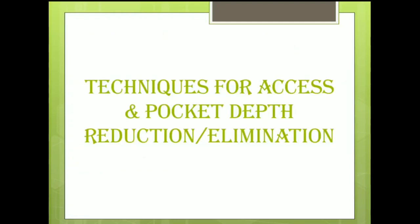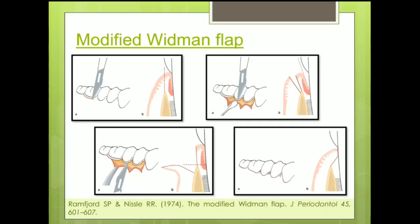Now let's go ahead with various flap surgical techniques. The first one is the modified Widman flap. Historically, the original flap technique proposed by Leonard Widman in 1918 resulted in certain aesthetic problems like denudation of root surfaces and interproximal areas. In order to overcome these limitations, Ramfjord and Nissle modified this technique in 1974, which eliminated the need for apical displacement of the flap and osseous recontouring. An internal bevel incision is given approximately one millimeter from the crest of the gingival margin, parallel to the long axis of the tooth, and the scalloping of the incision should follow the scalloping of the gingival margin.